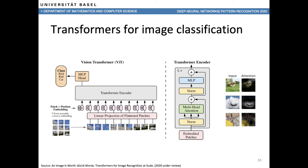There is also a new paper called 'An Image is Worth 16x16 Words: Transformers for Image Recognition at Scale,' currently under review, which shows how to use a transformer network for image classification. The image is separated into 16x16 small image patches fed into the transformer network, and this performs really well on the standard ImageNet classification task. An interesting result shown in the paper is the attention from the transformers, which highlights what is actually important for the network to make its final classification.